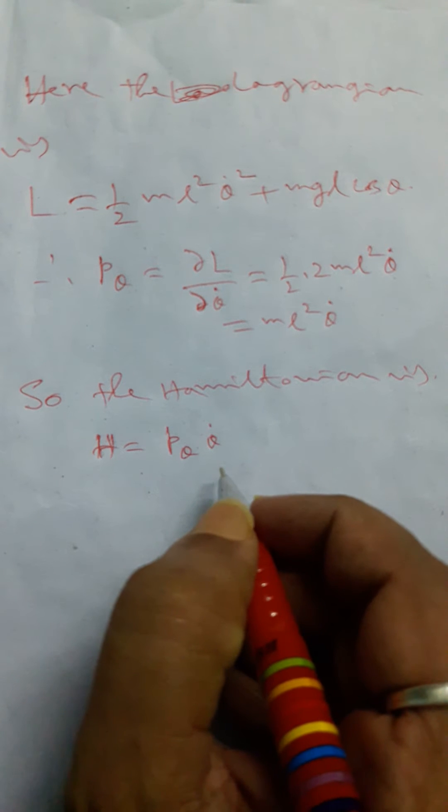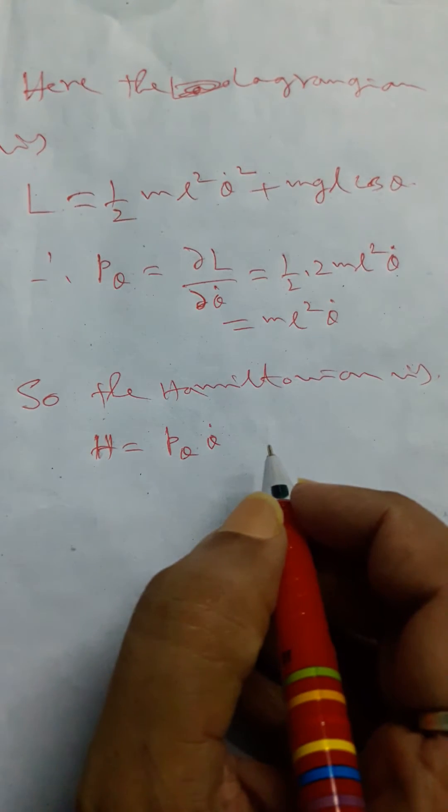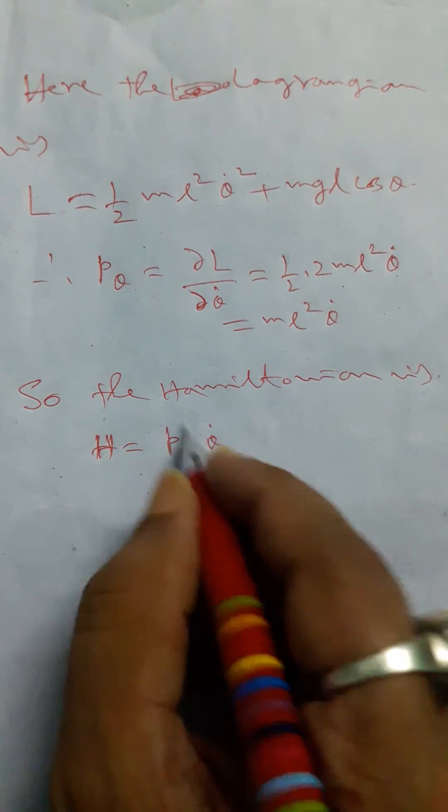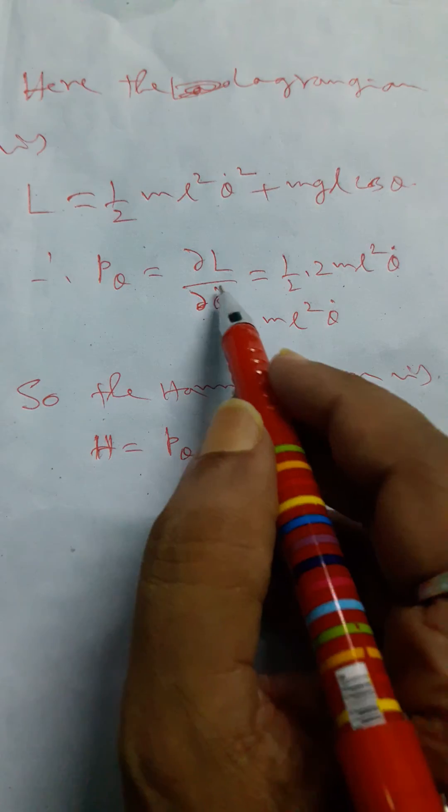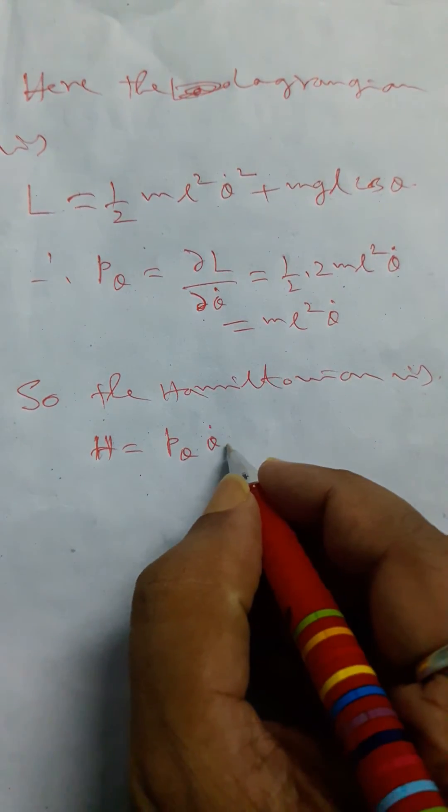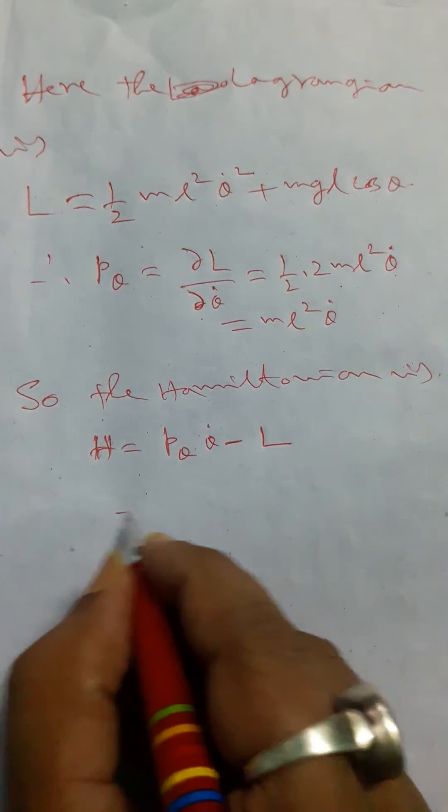Like in the earlier video, we consider Q̇ ∂L/∂Q_i, but here P_θ will be ∂L/∂θ̇, the generalized coordinate multiplied by θ̇ minus the Lagrangian.